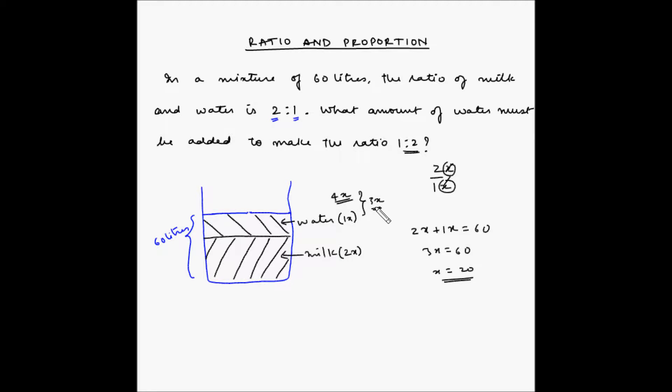Now, we know that we have to add 3 times x, 3 multiplied by x is equal to 3 multiplied by 20 which is equal to 60 liters. So, we have to add 60 liters and then the ratio of milk to water will become 1 is to 2.